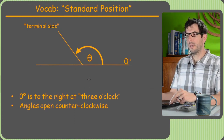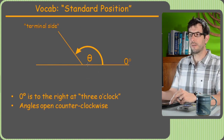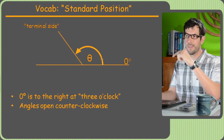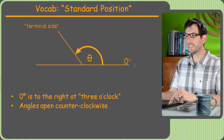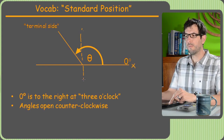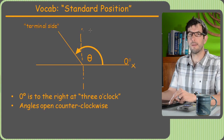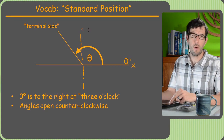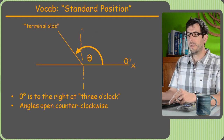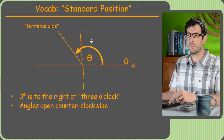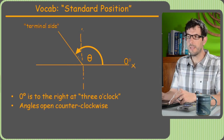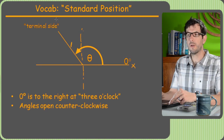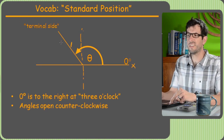We just need a few vocab words. One is standard position. Just like a clock always starts at 12 o'clock, angles all start at the 3 o'clock position — the positive x-axis. I didn't even draw in the y-axis, because we basically never use the y-axis in unit circles. The most common mistake involves using the y-axis when you should use the x-axis. Theta starts at the positive x-axis and goes counter-clockwise. Wherever theta stops, that radius of length one is called the terminal side.